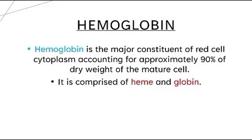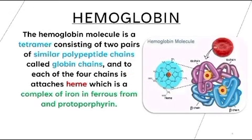Hemoglobin is a major constituent of red cell's cytoplasm, accounting for approximately 90% of the dry weight of the mature cells. It is comprised of heme and globin. The hemoglobin molecule is a tetramer consisting of two pairs of similar polypeptide chains — 2-alpha and 2-beta — called globin chains. To each of the four chains is attached heme, which is a complex of iron in ferrous form and protoporphyrin.